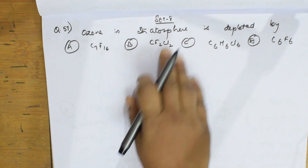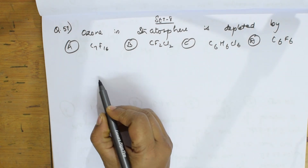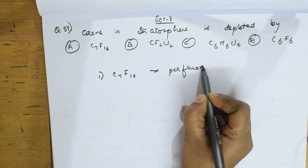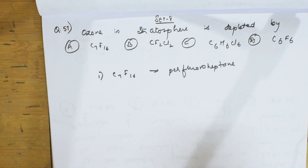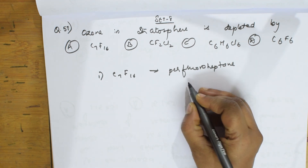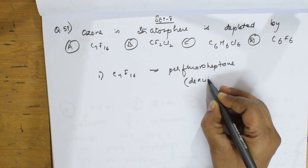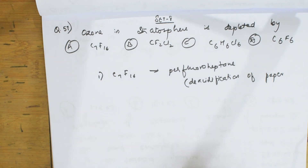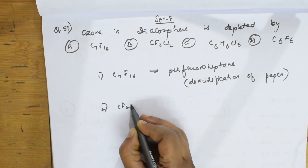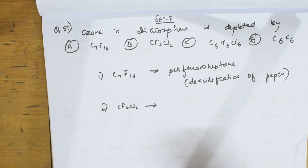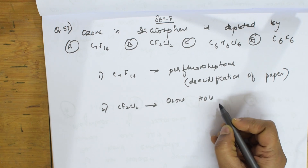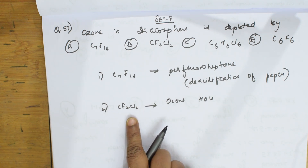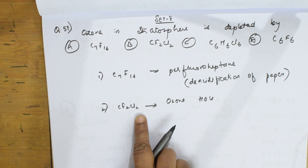Chlorofluorocarbons are causing ozone holes. The first compound is C7-16, called perfluoroheptane, which is used for deacidification of paper. Next, CF2Cl2 is causing ozone depletion by causing ozone holes. This is a halogenated hydrocarbon where the chlorine undergoes free radical mechanism, and that free radical causes ozone depletion.